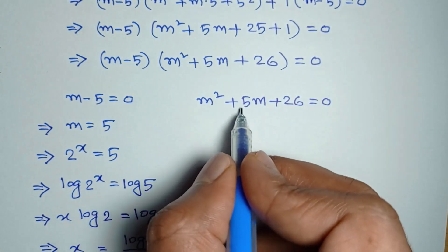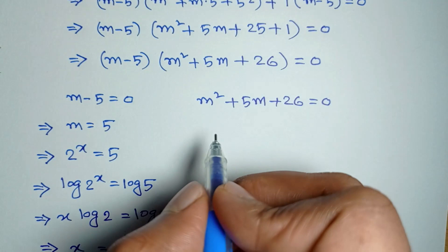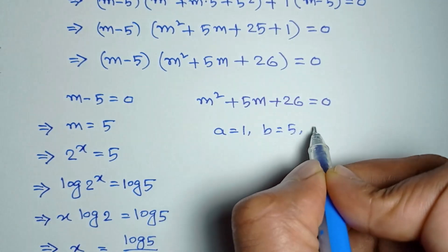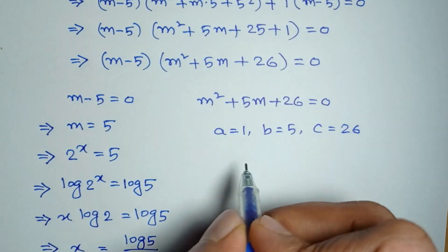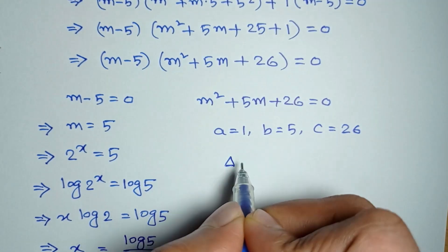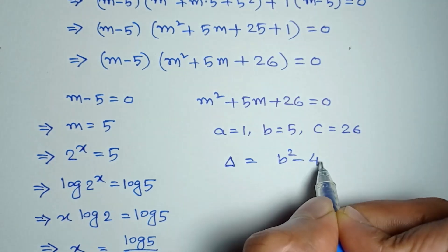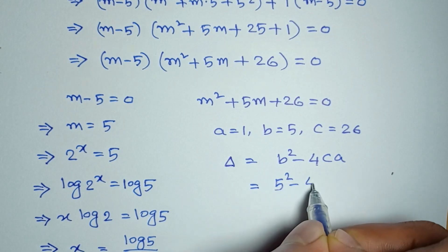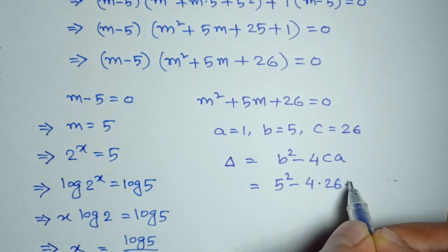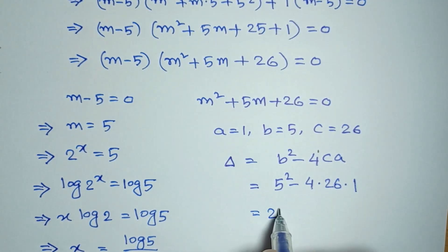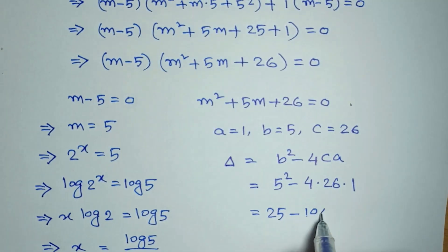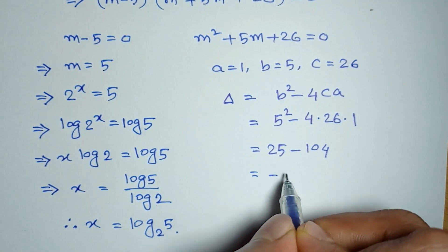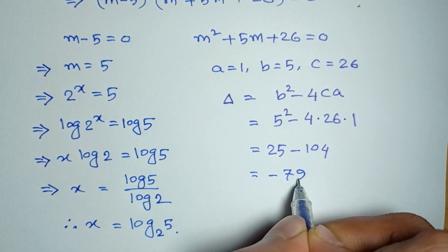For the quadratic factor m squared plus 5m plus 26 equals 0, it is a quadratic equation with a equal to 1, b equal to 5, and c equal to 26. The discriminant delta equals b squared minus 4ac, which gives 5 squared minus 4 times 26 times 1, equal to 25 minus 104, equal to minus 79, which is negative.